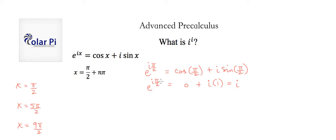Now, if this is equal to i, then i to the i-th power must be the same thing as doing e to the i times π over 2 to the i-th power.